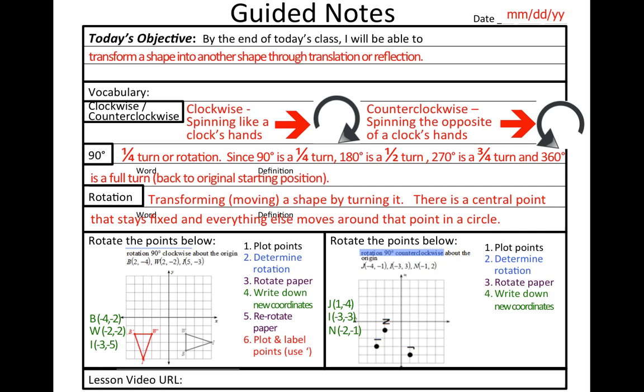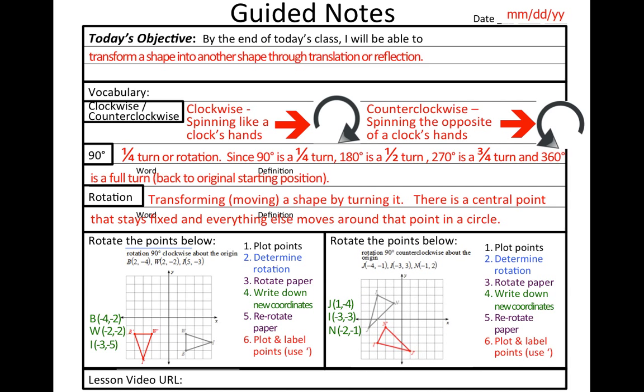Write down the new coordinates. Rotate the paper back. Write those new coordinates in. And so to take that original black triangle, or the triangle with the black points, and transform it into the triangle with the red points by rotating it 90 degrees counterclockwise, it looks like that.